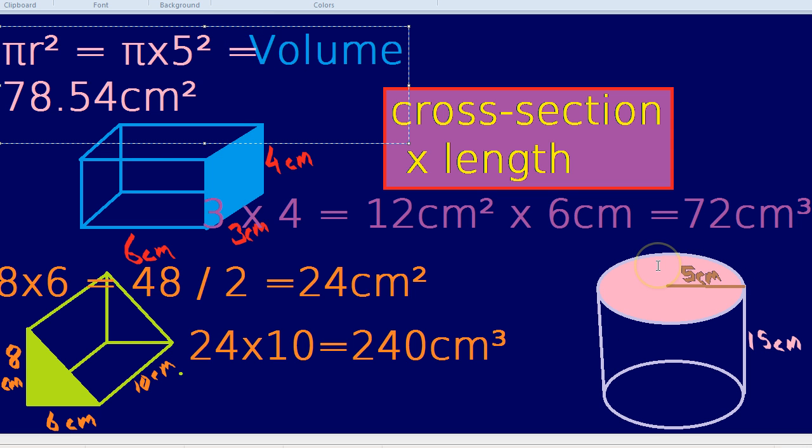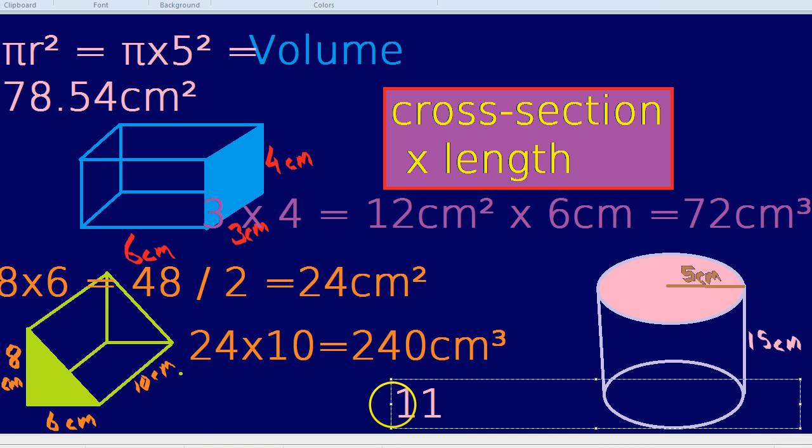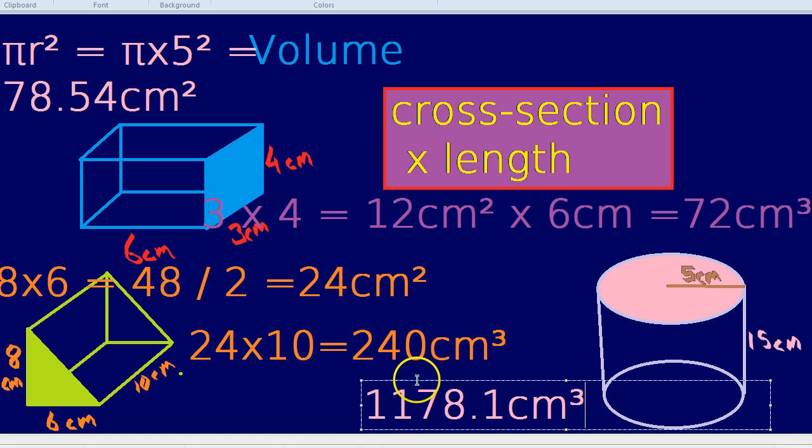What do we do to get the volume? The cross-section times by the length. So that amount times by the height of the circle, in this case, which is 15. And we get a grand total, as the volume, of 1178.1. 1178.1 centimeters cubed. And that is the method for finding the volume of 3D shapes.